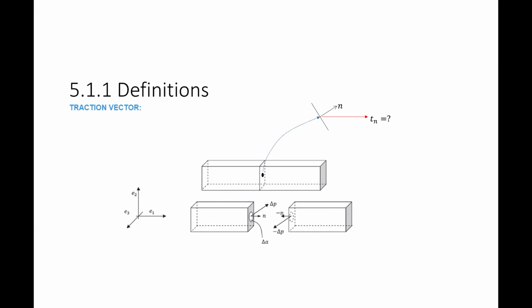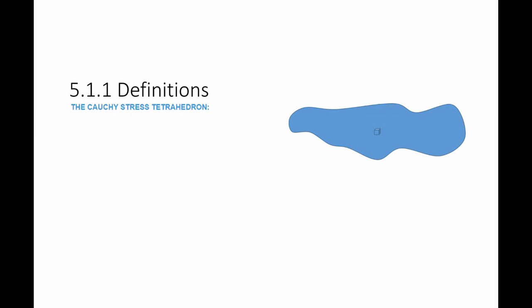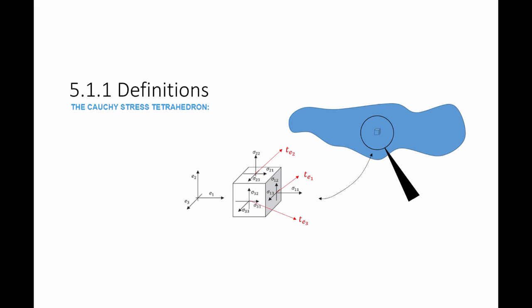After defining the traction vector, we wish to know how to calculate the traction vector on the surface with normal n and how it changes as n changes. We will show that the traction vector can be calculated using a matrix called the Cauchy stress matrix, developed by studying the Cauchy stress tetrahedron. We look at a material under load, extract a cube, and examine three of its surfaces: perpendicular to E1, E2, and E3. On each surface there is a traction vector: Te1, Te2, and Te3.